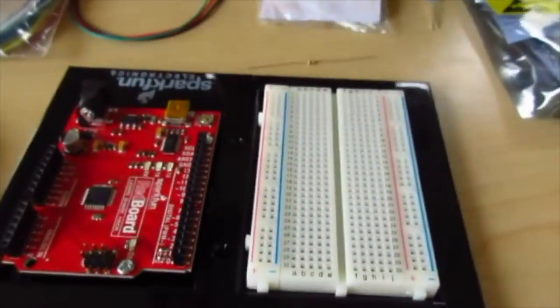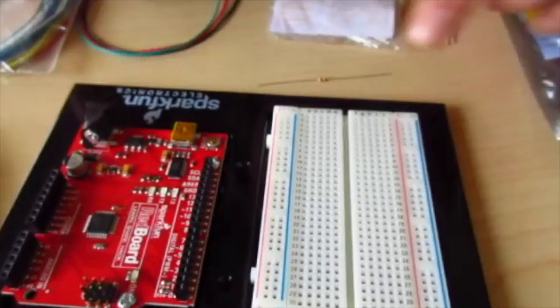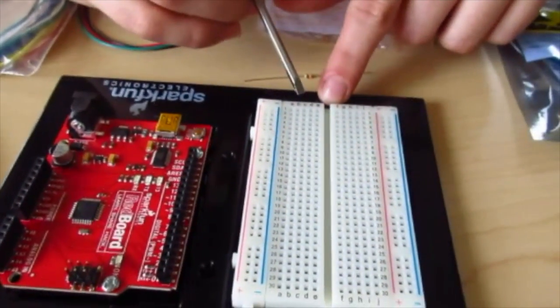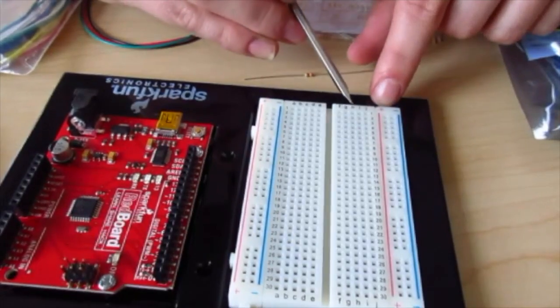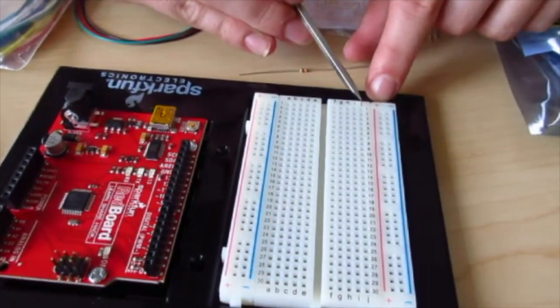On the breadboard, you can see various rows and columns that are labeled. You have A, B, C, D, and E on one side, and F, G, H, I, and J on the other side.